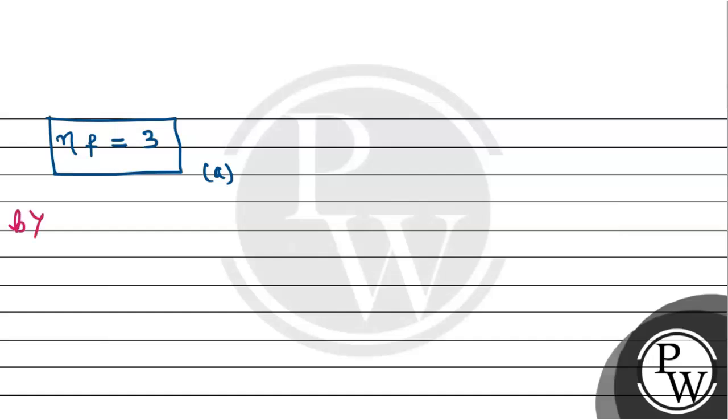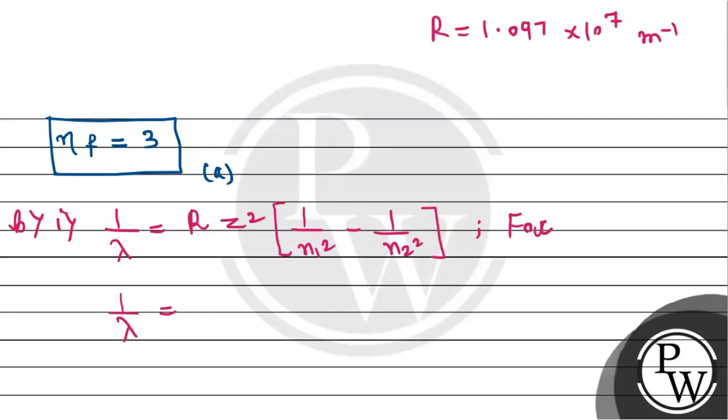Now we start with B part. For the first sub-part, we have to use Lyman series to find the longest wavelength. So for Lyman series, the formula is 1 by lambda equals R Z squared into the bracket 1 by n1 squared minus 1 by n2 squared. Here R is the Rydberg constant, which has a value of 1.097 into 10 to the power 7 meter inverse. For the longest value of lambda, n2 must equal 2 and n1 equals 1.